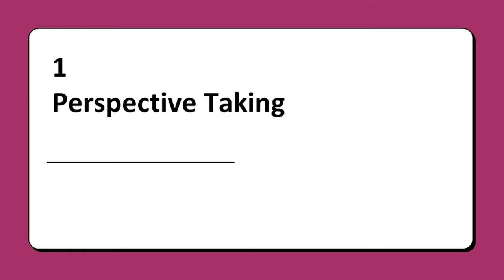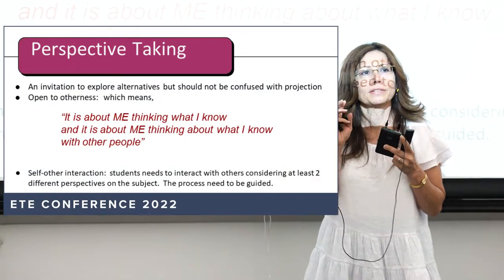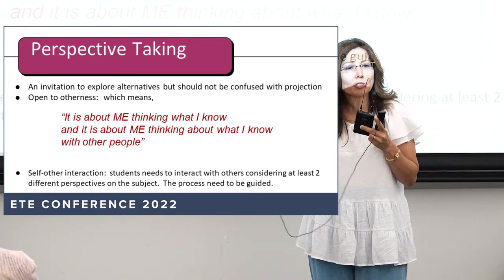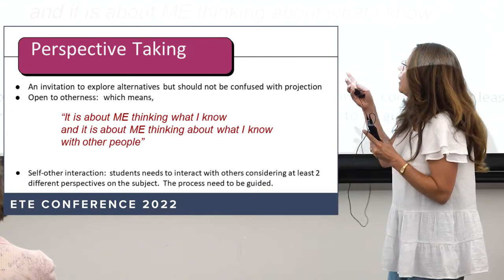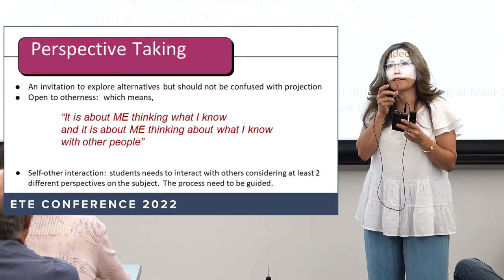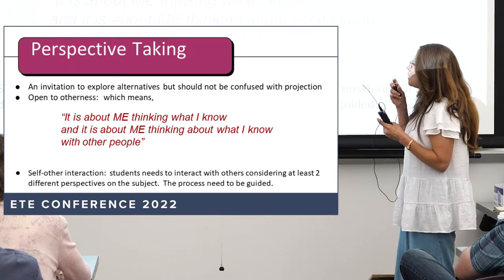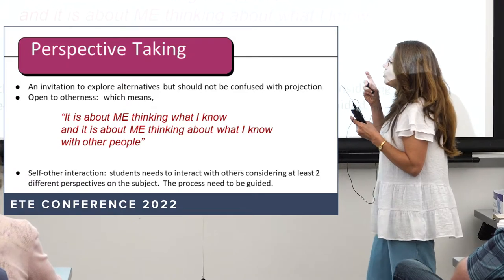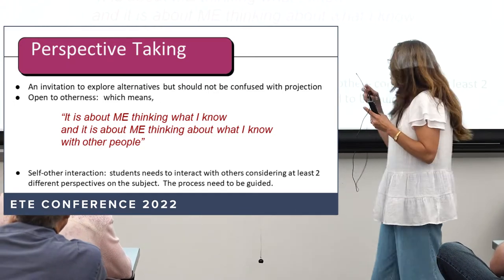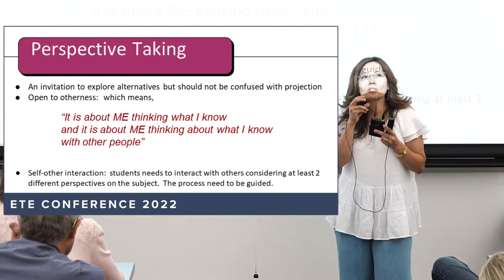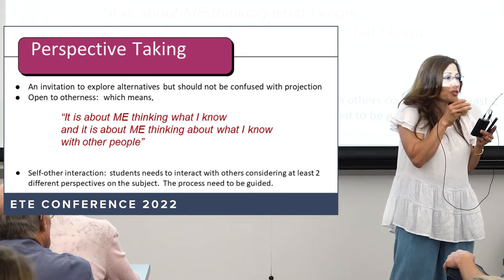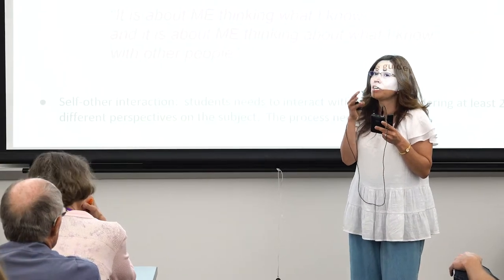Perspective taking — the author provides an invitation to explore alternatives, but gives two conditions. One is that it won't be confused with projection, which will be discussed later in this presentation. The other is that ideally it will be a social activity; it shouldn't happen in isolation. His concept of 'open to otherness' means it's about me thinking about what I know, but also about thinking about what I know with other people. He is big into self-order interactions, but he also says this process needs to be guided — you cannot leave the student to free range because they might fall prey to confirmation bias, in which they only look for information that reinforces their previous belief.